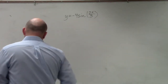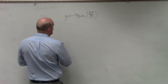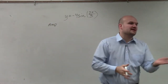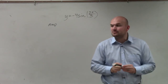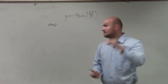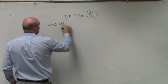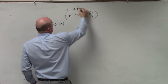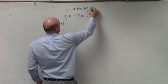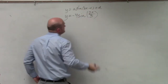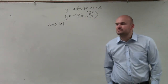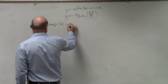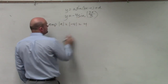So amplitude, period, and frequency. On a problem like this, the first thing we're going to figure out is the amplitude. Amplitude is the half distance from the max to the min — all you need to do to find it is take the absolute value of A. Remember from your notes last class period, we looked at A sine of bx minus c as our trigonometric transformation form. So amplitude is the absolute value of A, which in this case is the absolute value of negative 4, which equals 4.